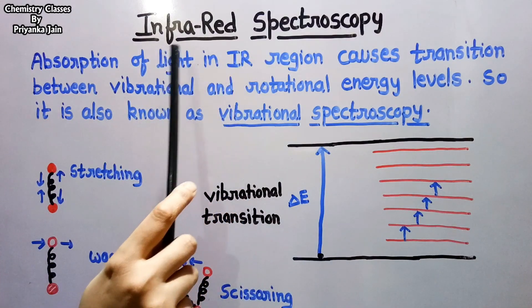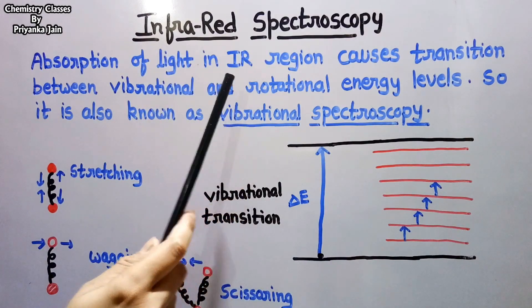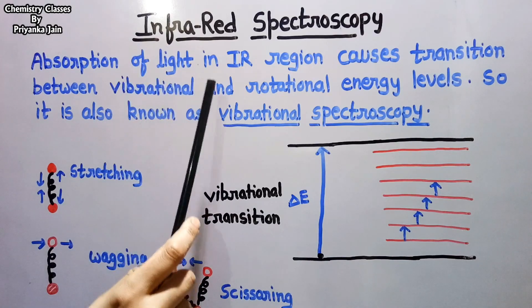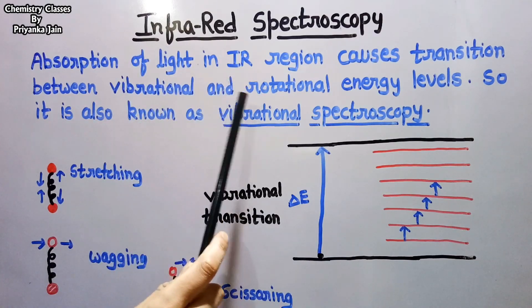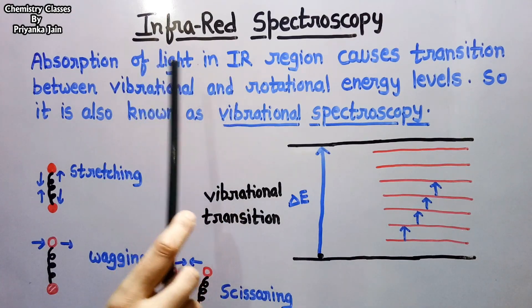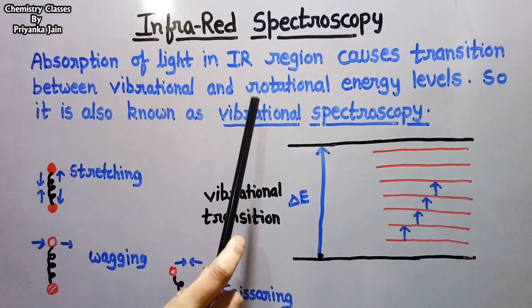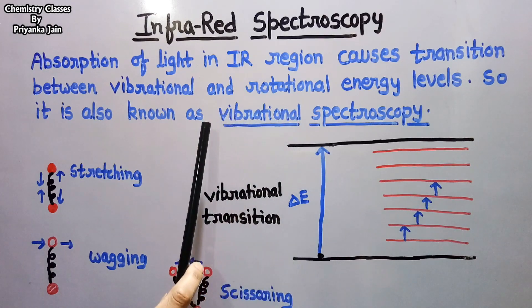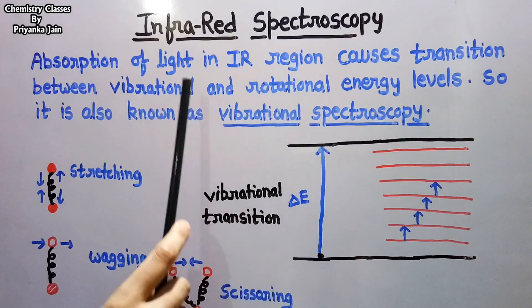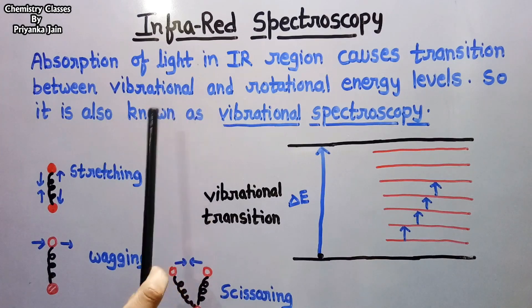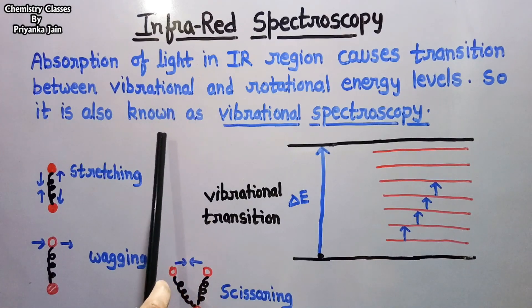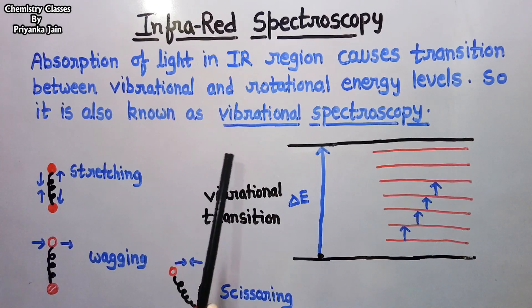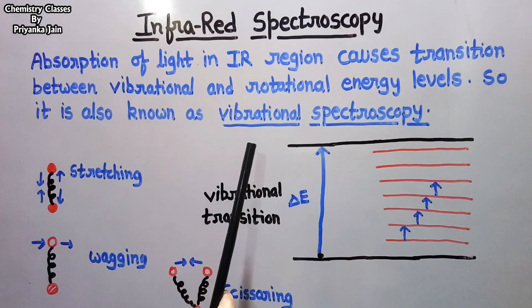What is infrared spectroscopy? The absorption of light in the IR region causes transitions between vibrational and rotational energy levels. Because of this, we get infrared spectroscopy, which is also known as vibrational spectroscopy.